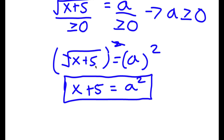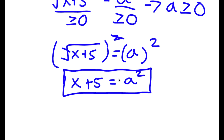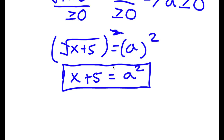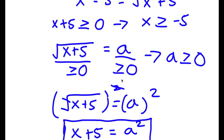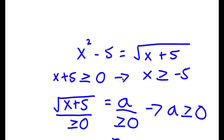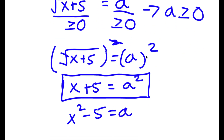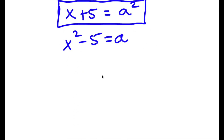Now what I'm going to do is find the value of a. We already know that the value of a is equal to x squared minus 5, because x squared minus 5 is equal to the square root of x plus 5, and the square root of x plus 5 equals a. So I can simply add 5 on both sides to get x squared is equal to a plus 5.